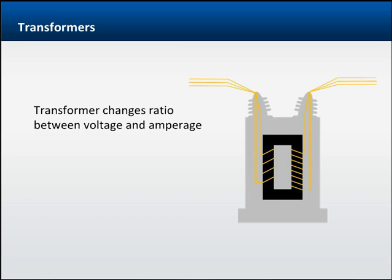So a transformer works as a ratio device, changing the ratio between voltage and amperage on both sides of the device while keeping the power essentially constant.